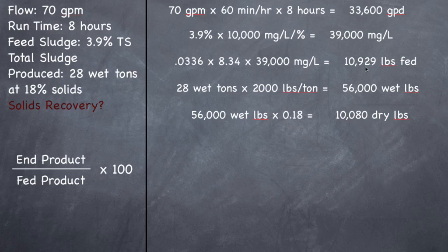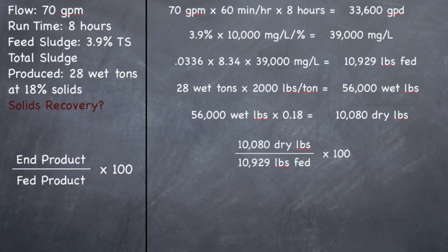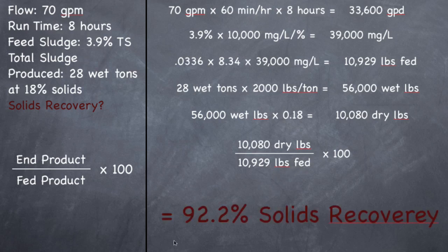You can see we lost almost 900 pounds of sludge in the filtrate — the difference between 10,929 and 10,080. So plugging into the formula: 10,080 dry pounds divided by 10,929 dry pounds fed, times 100, gives an efficiency of 92.2%. You're losing about 8% solids in the filtrate.